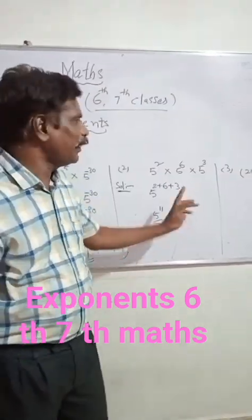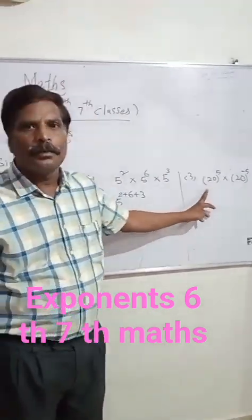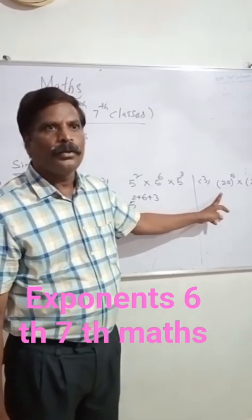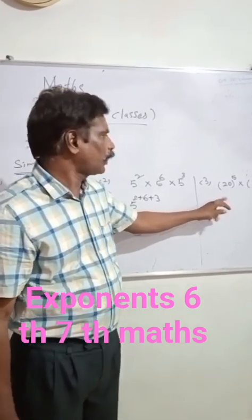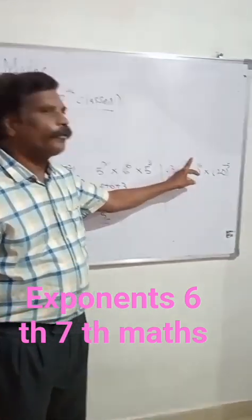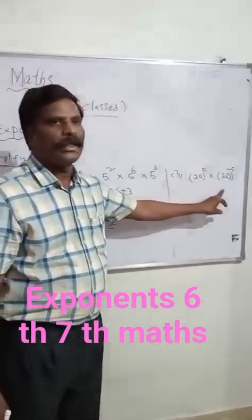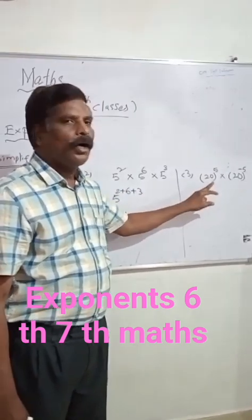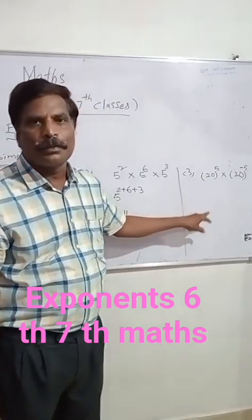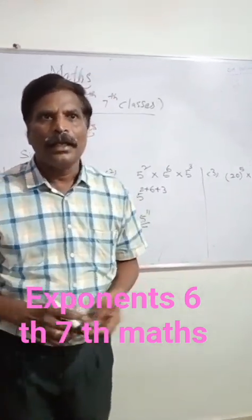Same way, this is a comment problem — try it yourself. The problem is 20 to the power of pi into 20 to the power of minus pi. How do you solve this problem? Try yourself.